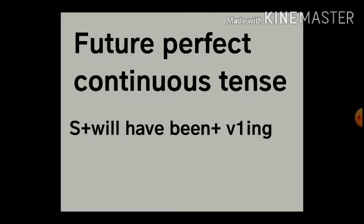Now we get into today's session — future perfect continuous tense. The verb structure is will have been plus V1 plus ing. Actually, this tense is not in common usage. Even native speakers will not use this, but we are going to learn what it is and when to use it. It is not commonly used in either written or spoken form.